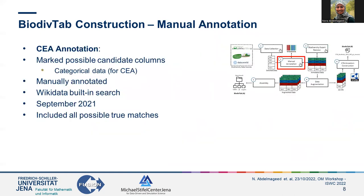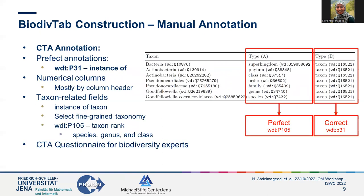The second stage of the pipeline is obtaining annotations for both CEA and CTA. We haven't supported the CPA task due to the specimen data issue discussed in the previous slide. For CEA annotation, we manually searched for terms inside the categorical columns in Wikidata's built-in search, simulating this ambiguous process as a scientist would. We picked all possible true matches for each cell of a possible candidate column. For CTA, we defined two levels of correct semantic types: perfect and correct, or OK classes.